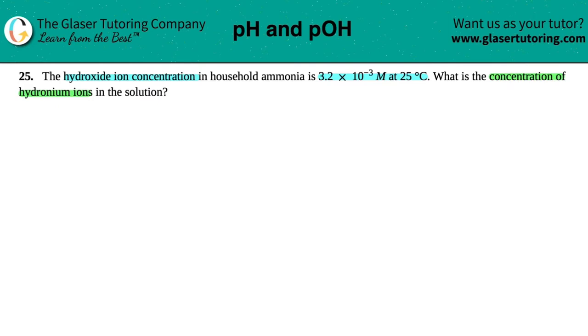Alright, so looks like they gave us a value, 3.2 times 10 to the negative 3 molarity, and they told us that was the hydroxide ion concentration. Remember, hydroxide ion is always OH minus.